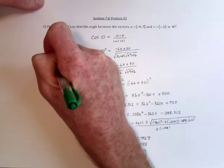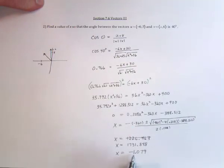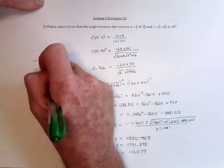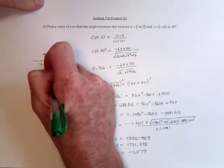And then x equals negative 1.079 would sound about right. 1.079.